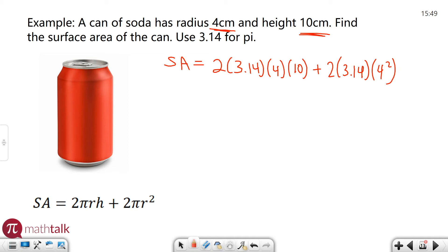So let's go ahead and continue to solve. Surface area is 2 times 3.14 times 4 times 10. That's going to be 251.2, which I would recommend using a calculator to type that in, plus 2 times 3.14 times 4 squared is going to be 100.48.